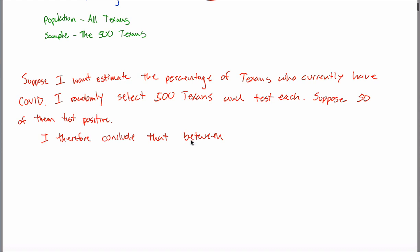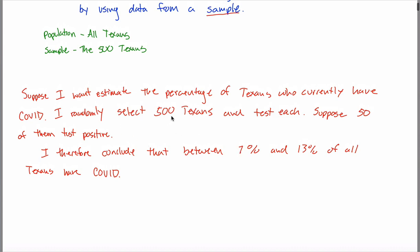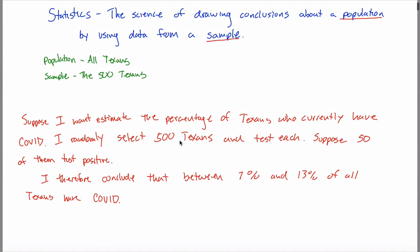We haven't learned how to write our statistical conclusions yet, so I can't really write one until later in the class. But trust me, it'll end up looking something like: I therefore conclude that between 7% and 13% of all Texans have COVID. Where'd that 7% and 13% come from? I'm making these numbers up — we don't know at this point how to come up with them. The point I want to make is just because 10% of the sample has COVID does not mean 10% of the population has COVID. What you'll see later in this class is we learn how to create things called confidence intervals. If 10% of my sample has COVID, maybe I can say with 95% certainty that between 7% and 13% of the population has COVID.